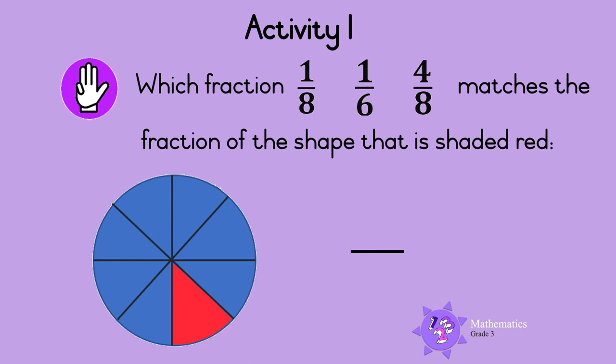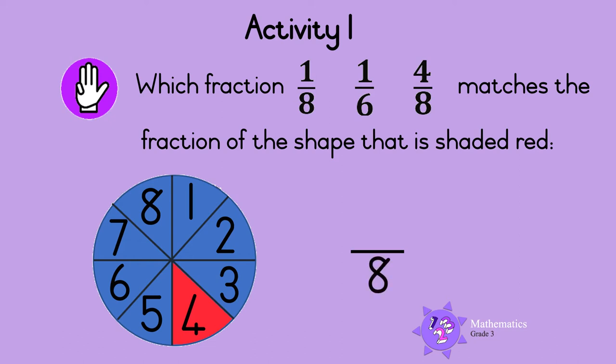What about this one? Which fraction is the correct match? How many equal parts is the shape made up of altogether? Let's count: 1, 2, 3, 4, 5, 6, 7, 8. So the shape is made up of 8 parts. We write 8 at the bottom of the fraction like this.